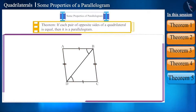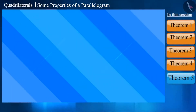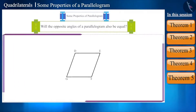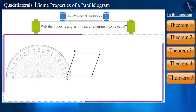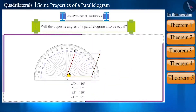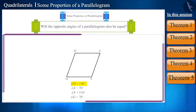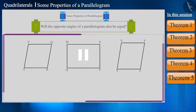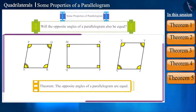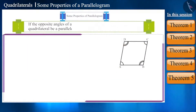Let's check — draw parallelogram DEFG and with a protractor find the measure of its opposite angles. You can see that the measure of angle D and angle F is equal, and the measure of angle E and angle G is also equal. By repeating this activity for other parallelograms, you will conclude that the opposite angles of all parallelograms are equal. This is another property of a parallelogram. Will its converse also be true?